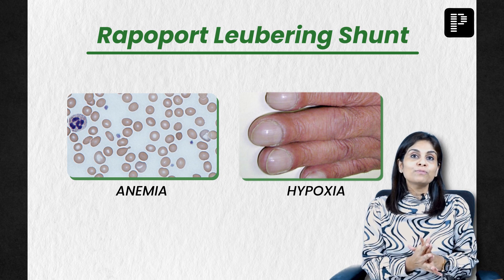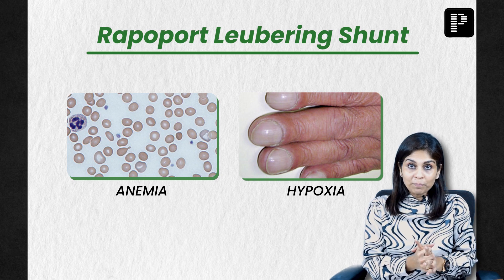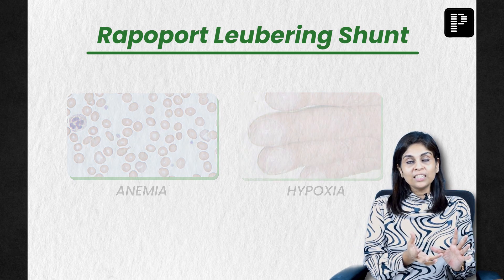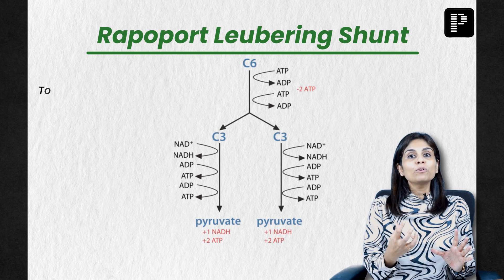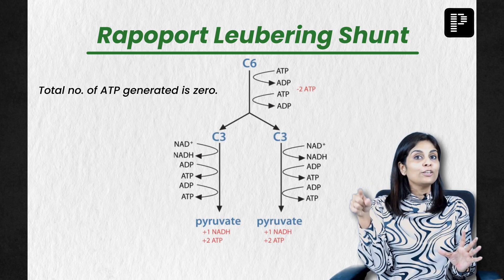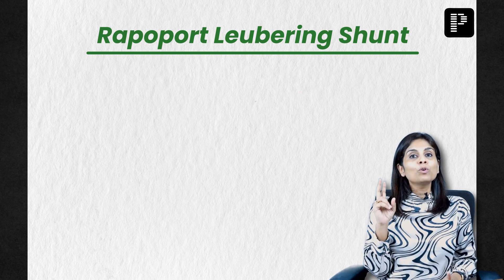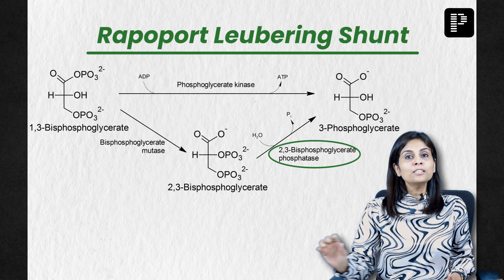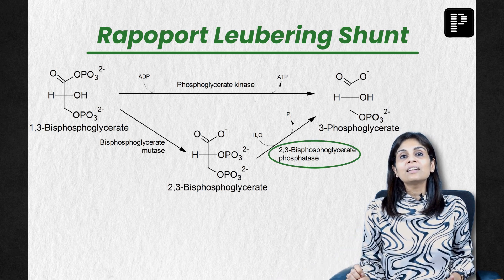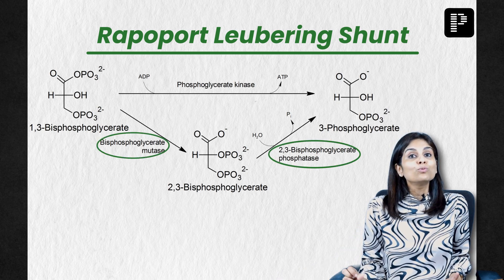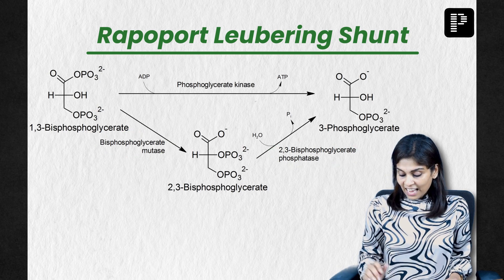Because this pathway bypasses a substrate-level phosphorylation step, when glucose goes through the Rapoport-Luebering shunt, the total number of ATP generated will be zero. This pathway involves two enzymes: bisphosphoglycerate phosphatase and bisphosphoglycerate mutase. I hope this helped you.